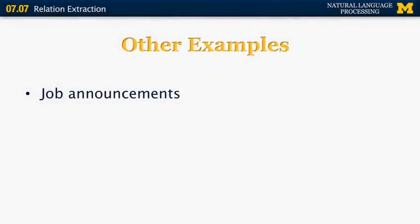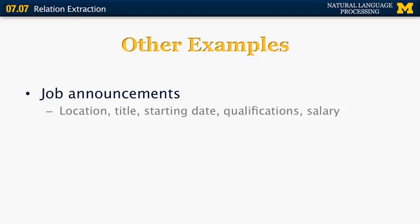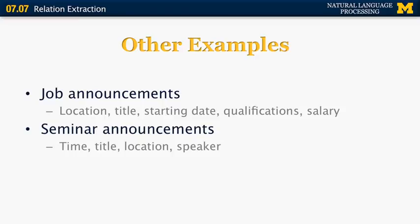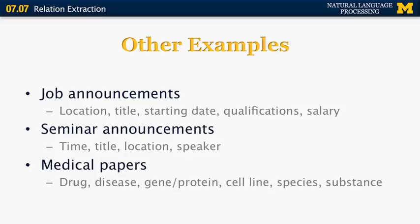Other examples of information extraction are things like job announcements. For job announcements, we want to find out things like the location of the job, the title, starting date, possibly the list of qualifications, the starting salary. Seminar announcements, we're interested in filling out slots like time, the title, the location, the speaker. For medical papers, we want to extract things like the drug, the disease, a gene or protein, a cell line, a species, or a substance.